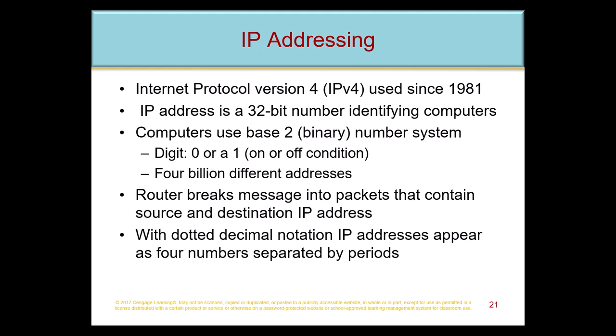The IP address itself isn't displayed as 32 binary bits — that would be cumbersome to remember. Instead, we convert it to numbers separated by dots. For example, the IP address for pcc.edu is 209.152.46.213. The pcc.edu part is called the URL — the Uniform Resource Locator — because it's much easier to remember pcc.edu than a string of numbers.